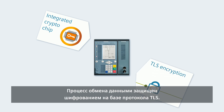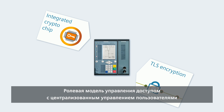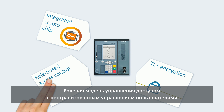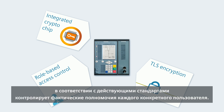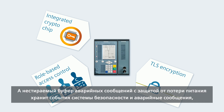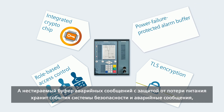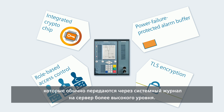Communication is secured with TLS encryption. A role-based access control with central user management, according to current standards, regulates a user's actual scope of action. And a power-failure-protected, non-erasable alarm buffer stores security events and alarms, which are additionally reported per syslog to a higher-level server.